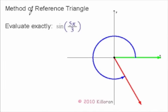This one is going to be done with a method of reference triangle, and we're going to evaluate exactly sine of 5π over 3.